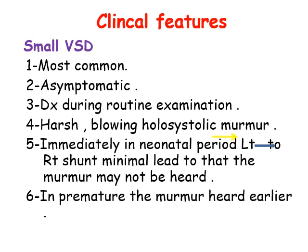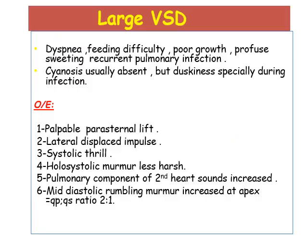Immediately in the neonatal period there is a minimal left-to-right shunt, so the murmur may not be heard; in premature infants the murmur is heard earlier. With large VSD, clinical features are more obvious: feeding difficulty, poor growth, and increased susceptibility to chest infections. Cyanosis is usually absent but may appear during infection. On examination there is a palpable left lateral displaced apical impulse, systolic thrill, holosystolic murmur (less harsh), increased pulmonary component of second heart sound, and mid-diastolic rumbling murmur when Qp:Qs ratio exceeds 2:1.